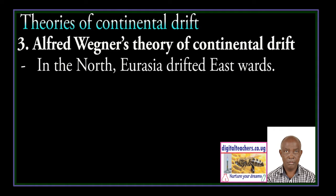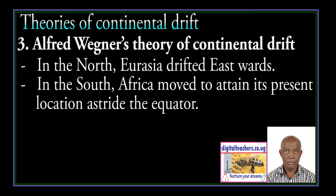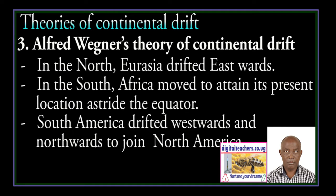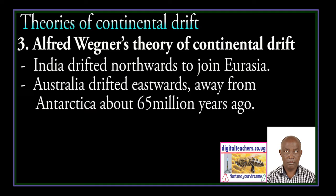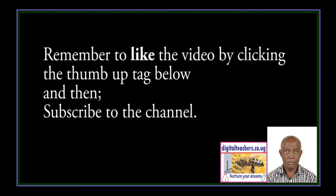In the north, Eurasia drifted eastwards. In the south, Africa moved to join North America. India drifted northwards to join Eurasia. Australia drifted eastwards away from Antarctica about 65 million years ago. Africa drifted northwards.